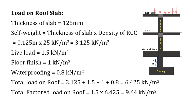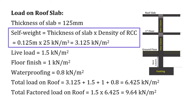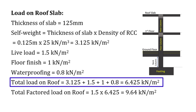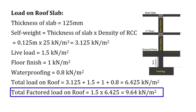To calculate the total load on the roof slab, we need its self weight, given by thickness of slab times density of RCC. With thickness 125 mm and RCC density 25 kN/m³, self weight of roof slab equals 3.125 kN/m². Total load on roof slab equals self weight plus live load (1.5) plus floor finishing (1.0) plus waterproofing (0.8), giving 6.425 kN/m². The total factored load on roof equals 1.5 × 6.425 = 9.64 kN/m².